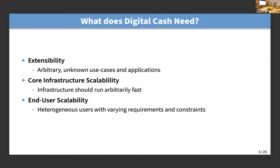So what do we need? Well, at the minimum, we need our system to be extensible — we're going to have to deal with use cases that might not exist yet. We also need our core infrastructure to be scalable. And we need this system to be usable by a variety of end users. Different people have heterogeneous hardware and different trust assumptions, and they all need to be able to efficiently interact with the system.